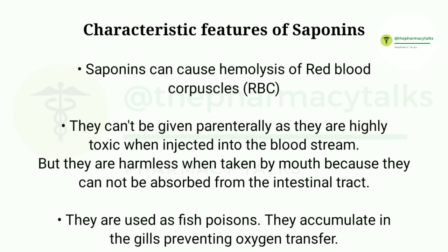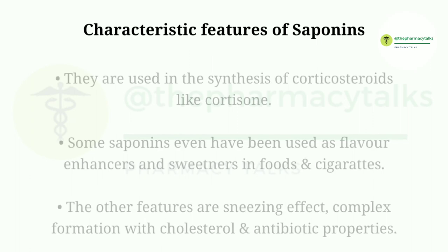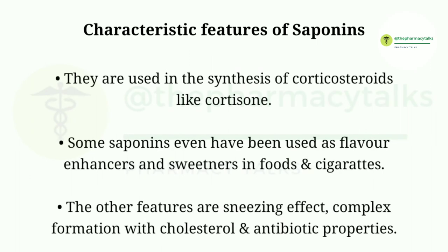They cannot be given parenterally as they are highly toxic when injected into the bloodstream, but they are harmless when taken by mouth because they cannot be absorbed from the intestinal tract. They are used as fish poisons, as they accumulate in the gills preventing oxygen transfer. They are used in the synthesis of corticosteroids like cortisone. Some saponins have also been used as flavor enhancers and sweeteners in foods and cigarettes. Other features include a sneezing effect, complex formation with cholesterol, and antibiotic properties.